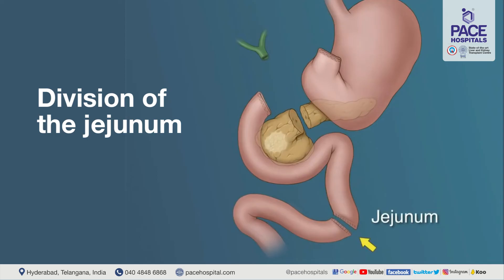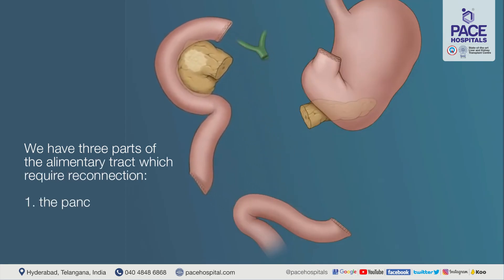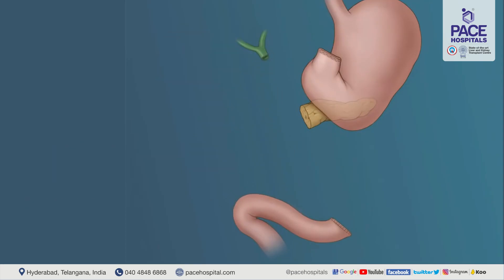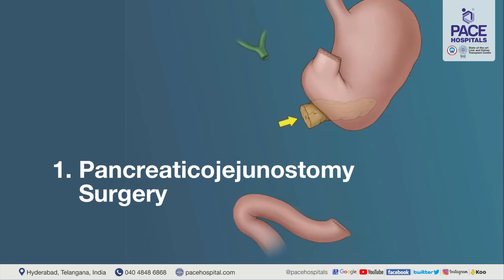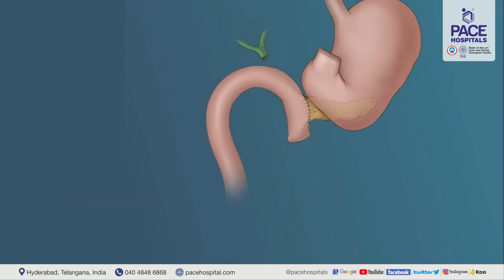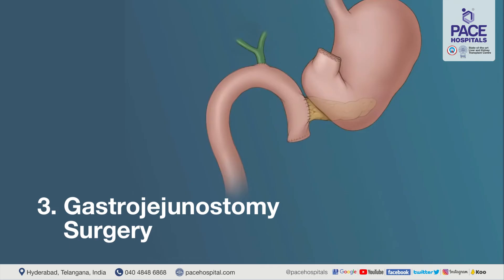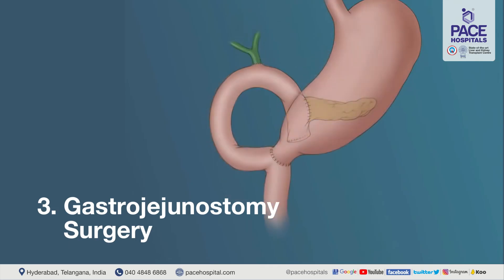Once the specimen is out, we have three parts of the alimentary tract which require reconnection: the pancreas, the stomach, and the bile duct. First, the pancreas is usually joined to the jejunum by a surgery called a pancreaticojejunostomy. Sometimes the pancreas can be anastomosed to the stomach, but most of the time we join the pancreas to the jejunum. Likewise, the bile duct is joined to the intestine so that bile can flow into the intestine — called a hepaticojejunostomy. The third part involves joining the stomach to the intestine so that food can pass through.